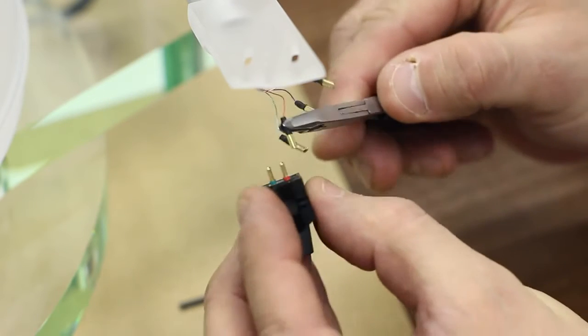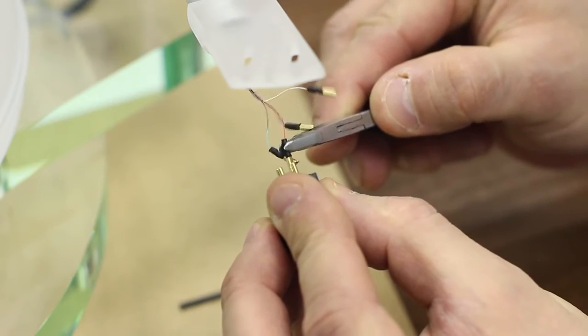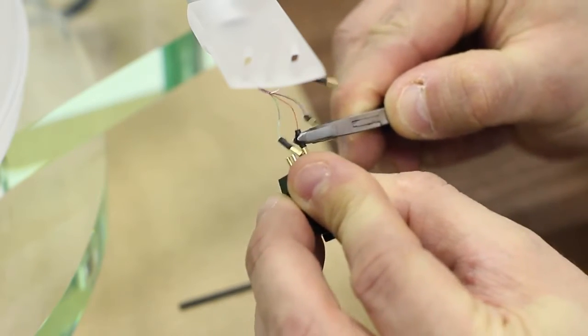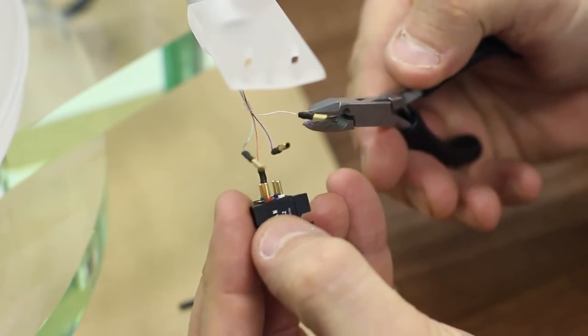Connect the headshell lead tips onto the product terminals of the same color with a small pair of pliers. Be careful not to bend the tips or the terminals.